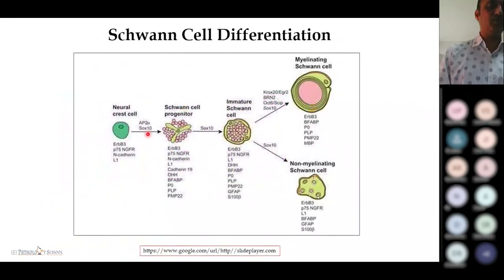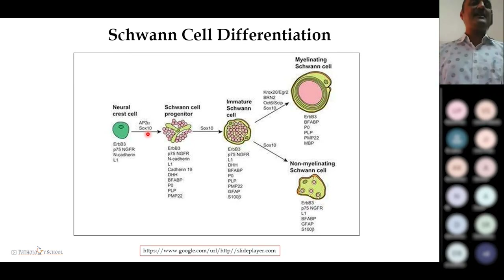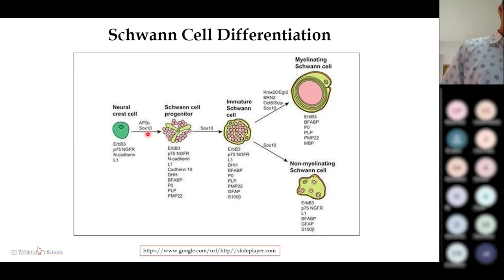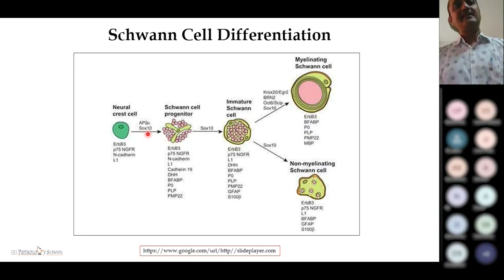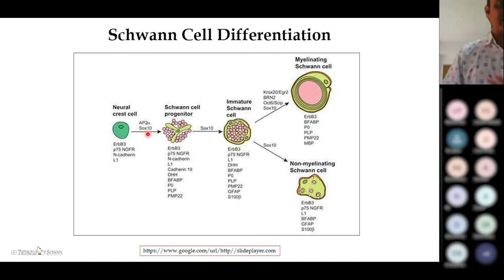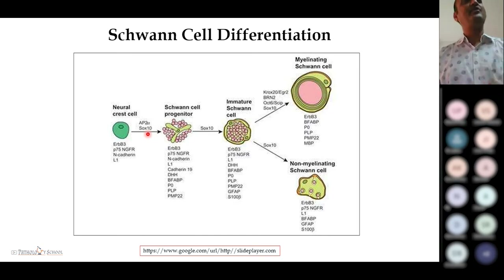Schwann cell differentiation starts from neural crest cells, which differentiate into Schwann precursor cells, then immature Schwann cells, and further into myelinating or non-myelinating Schwann cells. At every stage of differentiation there are certain immunohistochemical markers — SOX10, S100, GFAP, P75 — which we will encounter in further slides.